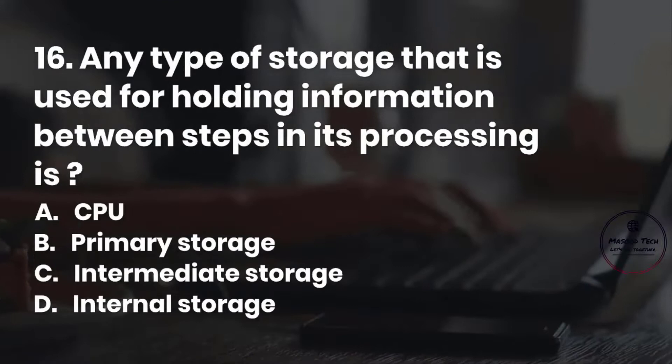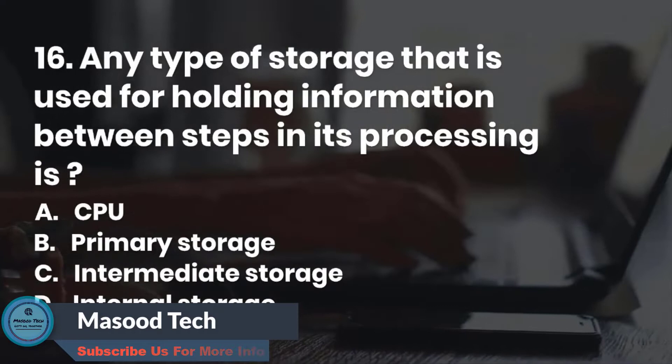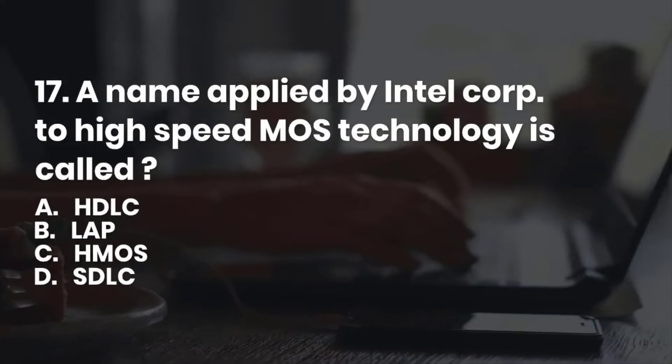Number 17. A name applied by Intel Corp to high-speed MOS technology is called: A. HDLC. B. LAB. C. HMOS. D. SDLC. Correct answer is C.